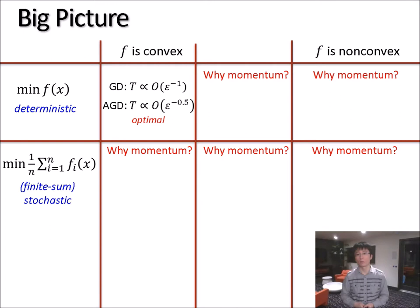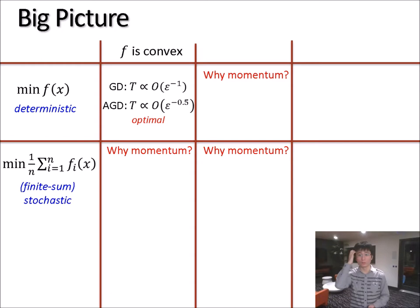Even more interestingly, there are natural functions that are maybe not super non-convex, say between convex and non-convex. Then, can we do momentum there? And if so, how can we do it optimally? So this part is going to be about the cases here.